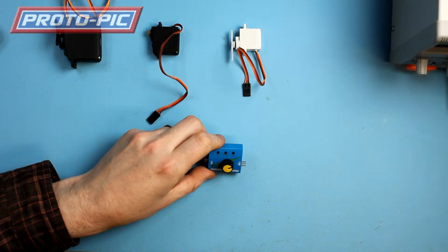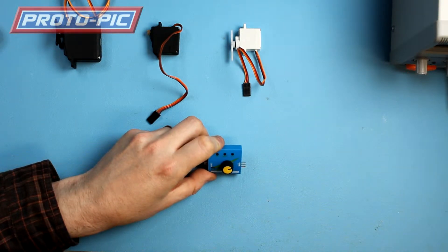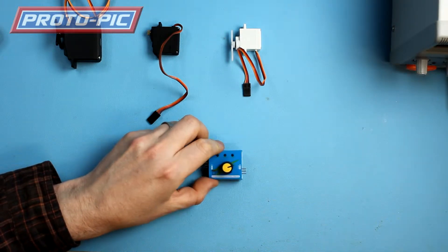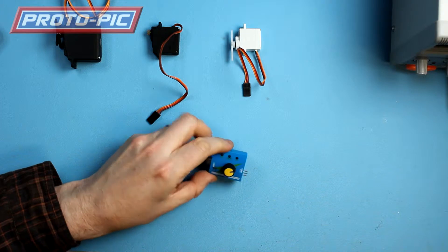And all you need is 4.8 to 6 volts. So you can use like a battery pack or we're using this power supply here just so I can show you some current draw as we test the different servos that we do.